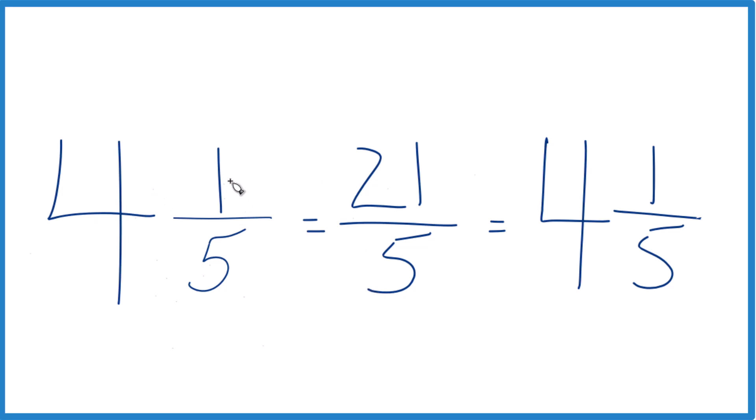And note that 4 and 1 fifth, this mixed number here, it's equal to this improper fraction, 21 fifths. They have the same value, it's just that we've represented them differently. This is an improper fraction, this is a mixed number.